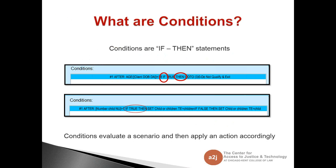In the first example, I am evaluating whether the age of the end user is less than 18. I have the variable client DOVDA — client date of birth date — and I've asked them in a previous question: what is your date of birth? Then I use the function age to convert that date of birth into a number in years, and evaluate whether that is less than 18. If it is less than 18, I'm telling A to J Author to take the end user to the question 'do not qualify, exit' — a question that says you have to be at least 18 years old to use this form, please exit.